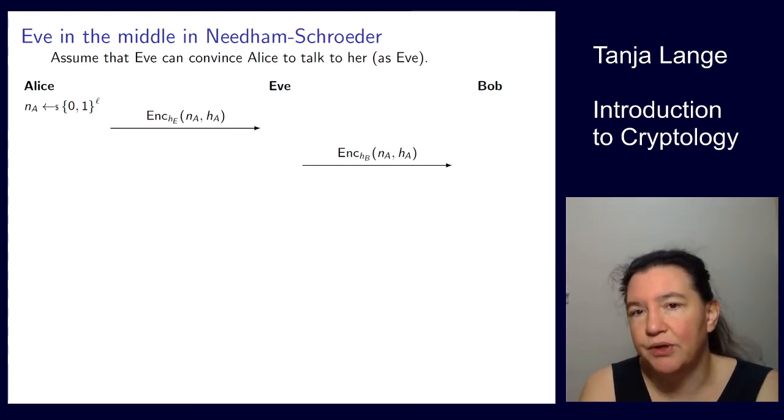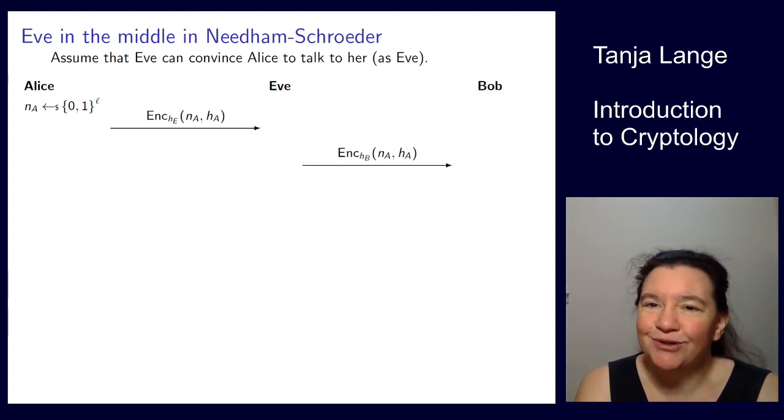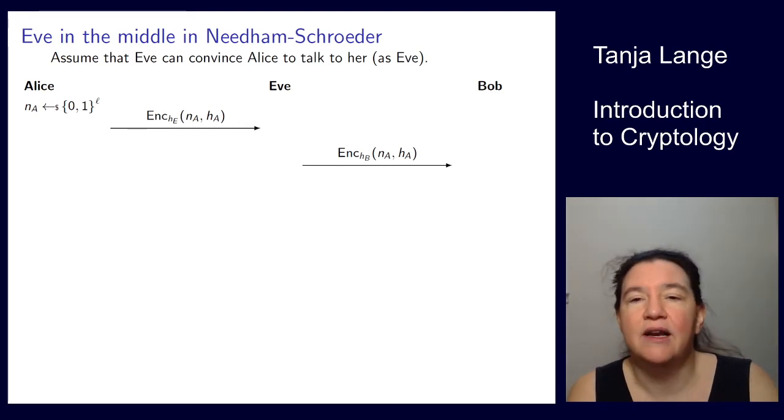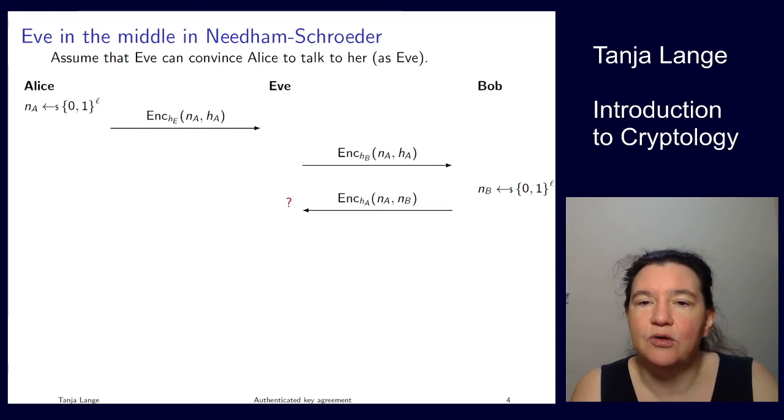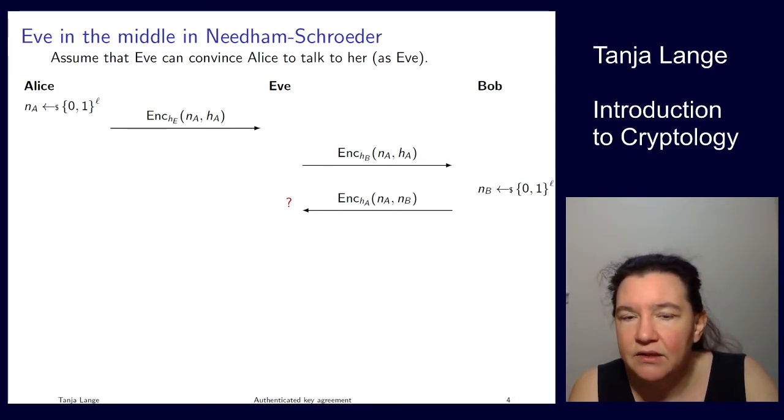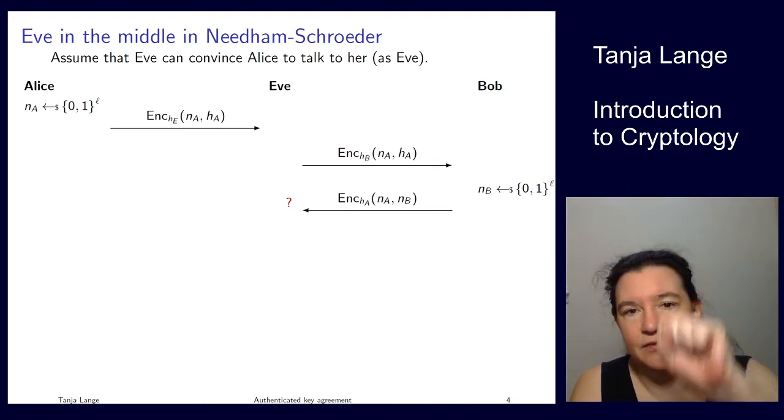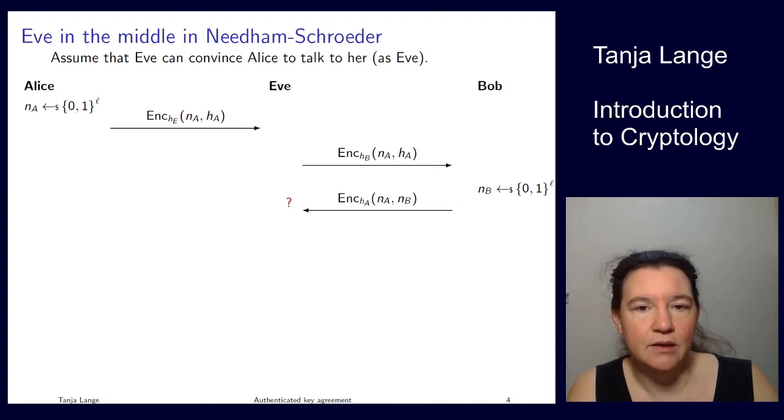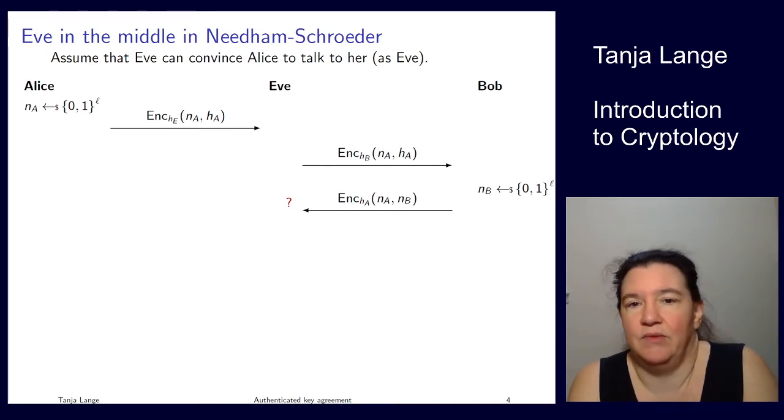So at this point, Bob gets a message claiming to come from Alice. He decrypts it, obtains N_A, H_A says, ah, Alice wants to talk to me. How nice. It hasn't happened in a while, Bob. Let's go ahead. Let's pick our random nonce. So he picks this N_B. And then, thinking it comes from Alice, he encrypts this to Alice. So he answers with the valid N_A and he includes his random nonce N_B. Now this, Bob, Eve grabs the packet, but she can't actually do anything with it because it's not encrypted to her. So she just gets a question mark.